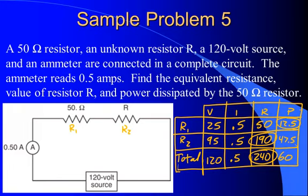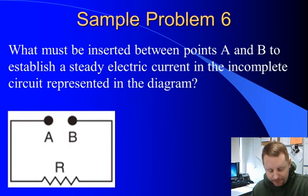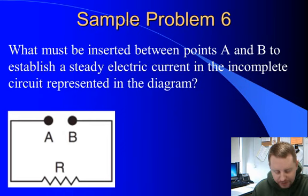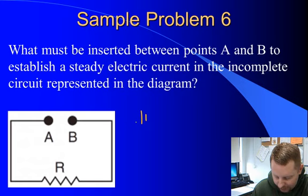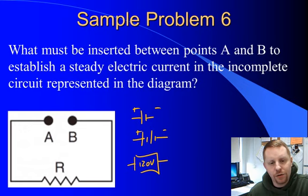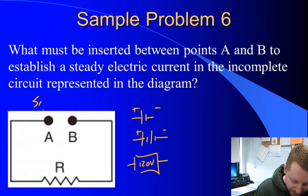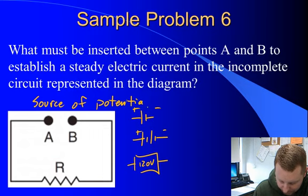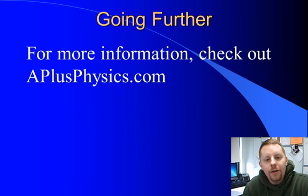One last question: what must be inserted between points A and B to establish a steady electric current in the incomplete circuit? We have a resistor already. In order to have current flowing, we need a potential difference — a source of potential difference, such as a cell, a battery, or a voltage source. Anything that provides a source of potential difference would give us a complete circuit in which current flows. Hopefully that gets you started. If you have questions, check out aplusphysics.com. Thanks for your time and make it a terrific day.